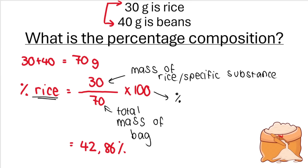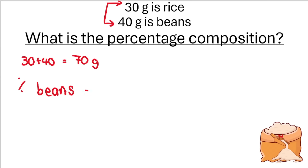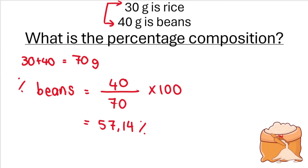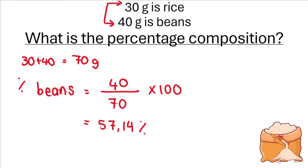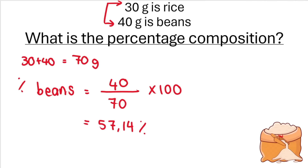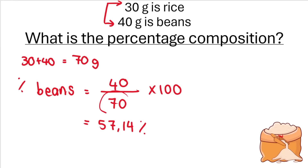To get the percentage of the bag that is beans, you could say 100% minus 42.86%. Or you can put the mass of beans (40 grams) at the top of the fraction and the total mass of the bag at the bottom, times 100, and get 57.14%. When we work out percentage composition, we are working out percentage composition by mass — the bottom of the fraction is always the total mass.